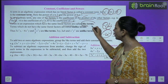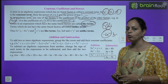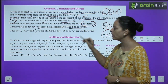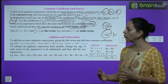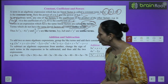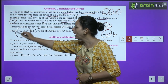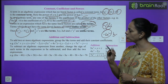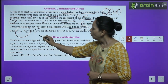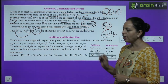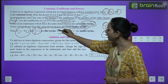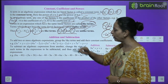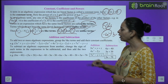Terms in an expression which have the same literal factors are called like terms, and terms which do not have the same literal factors are called unlike terms. For example, 3x²y and −4x²y are like terms because both have x² and y. But 3xy, 3ab, and x²y² are unlike terms since their variables are totally different.